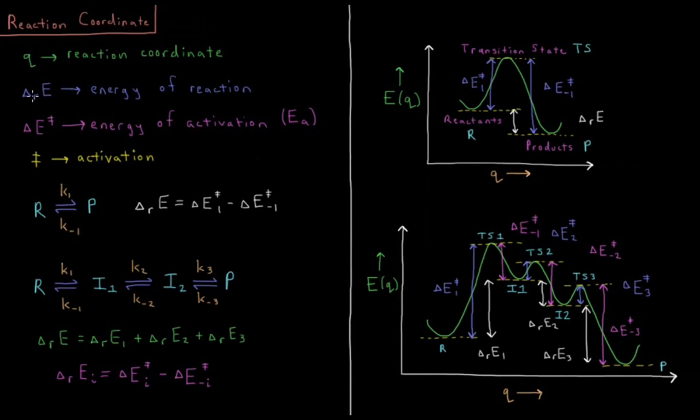Some quantities that we want to look at: delta RE, the energy of reaction. Delta E with this kind of double bar, that's the energy of activation, or EA from our previous video on the activation energy. This double bar type of nomenclature indicates activation, or something that occurs at what we call a transition state.